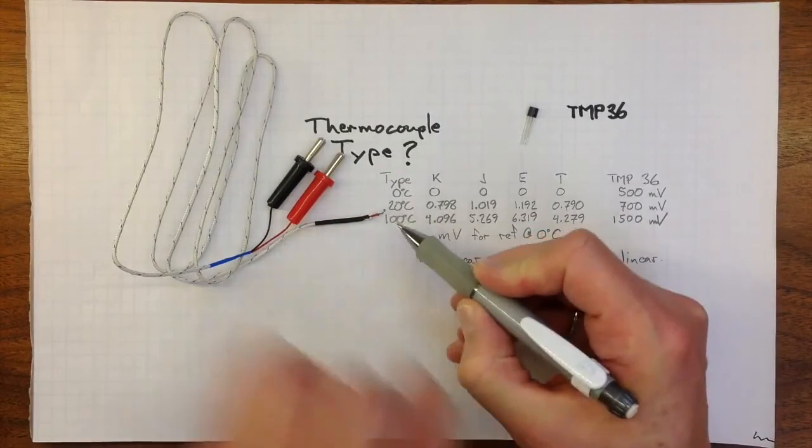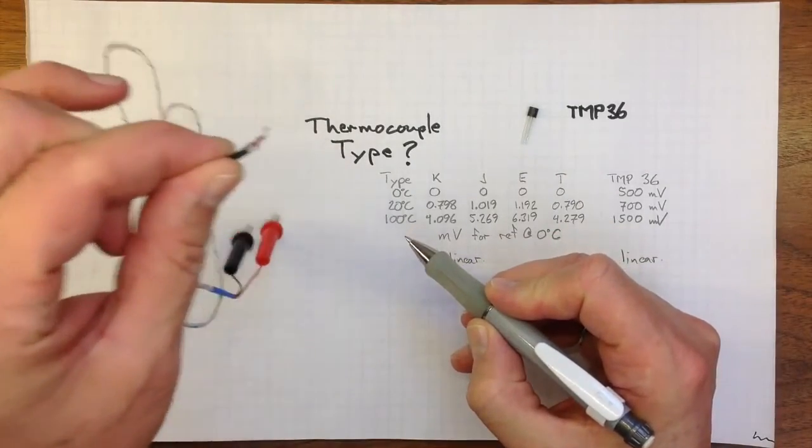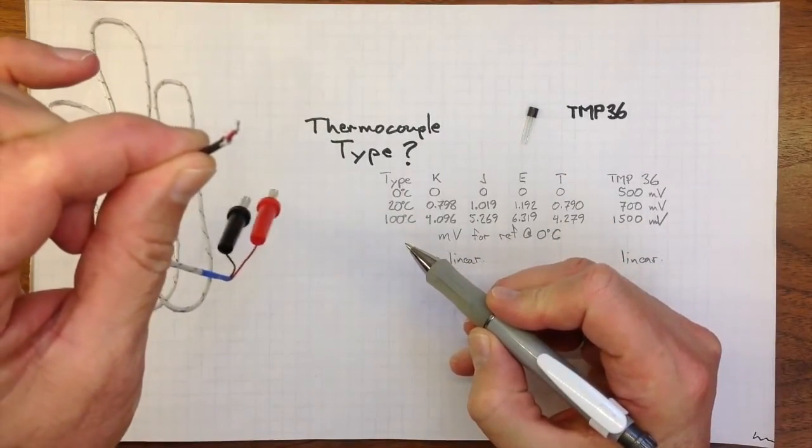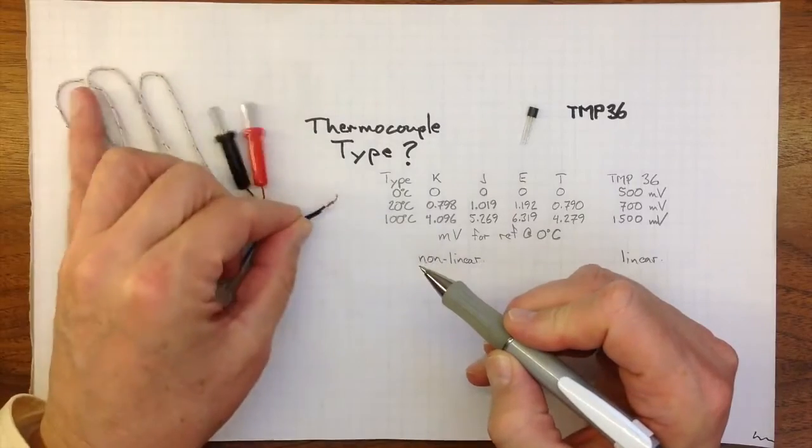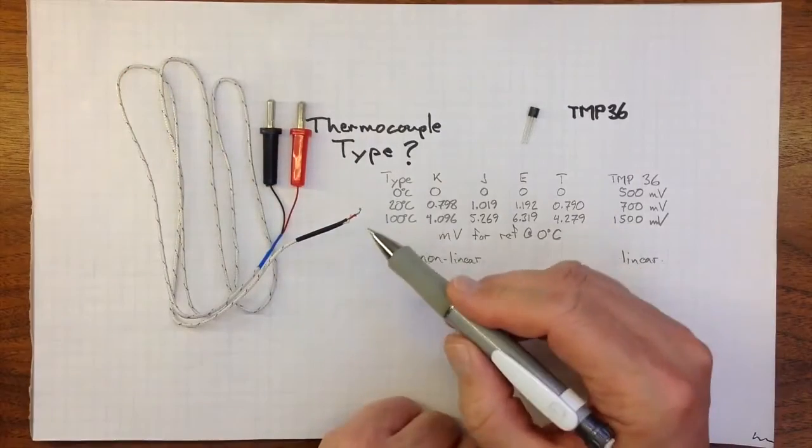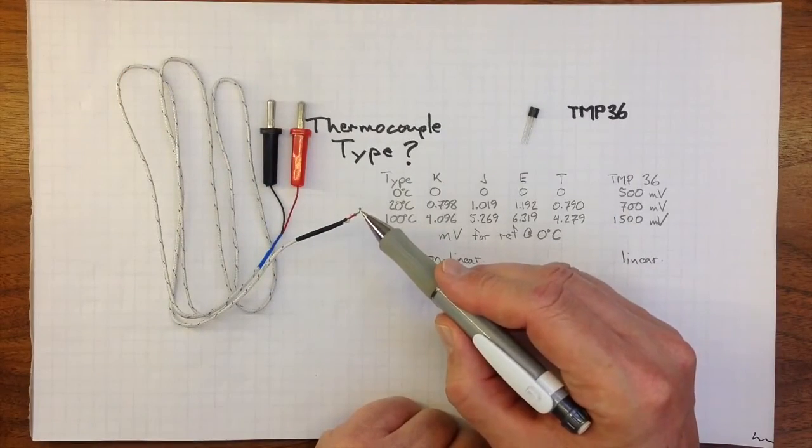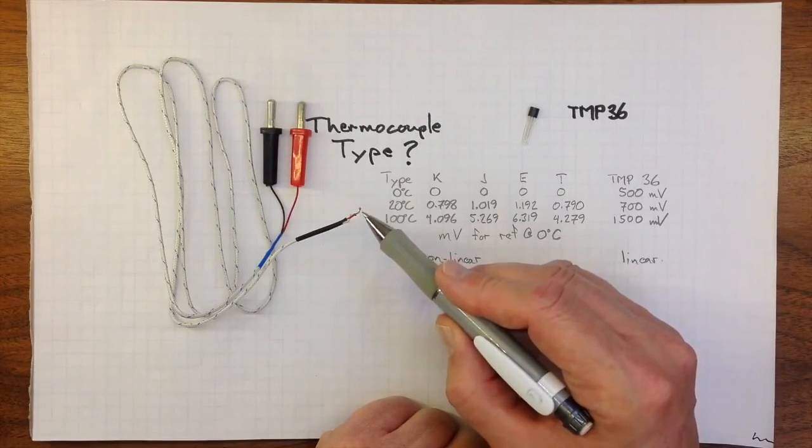That little bead there, maybe if I hold it up a little closer, it's still pretty tiny. It's very small, it doesn't have very much mass, so it doesn't take very much energy to heat it up, and it will reach its new temperature quite quickly.